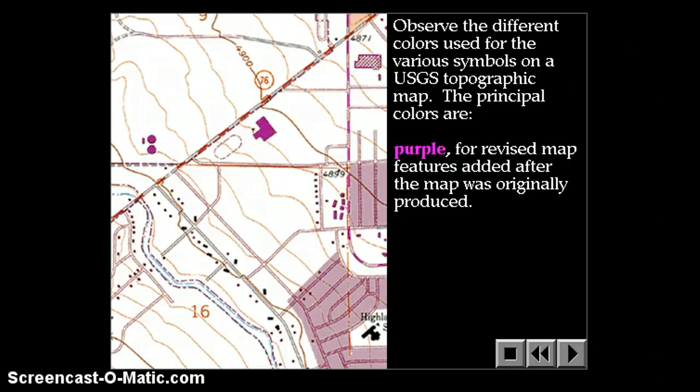The brown are mostly used for contour lines that show elevation. We'll be talking more about that soon. Purple are used for revised features on the map, things that were put on the map after it was originally produced. So if a new building is built or a new urban area is developed, it'll be in purple.